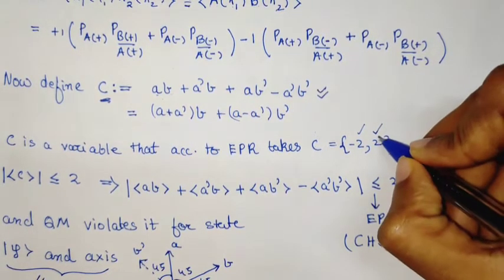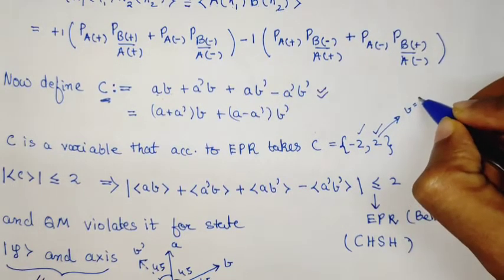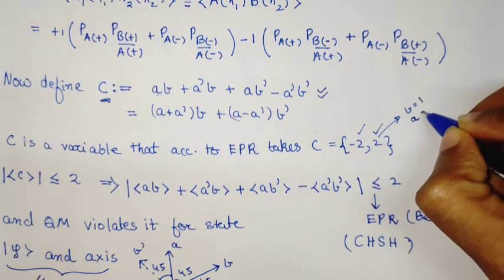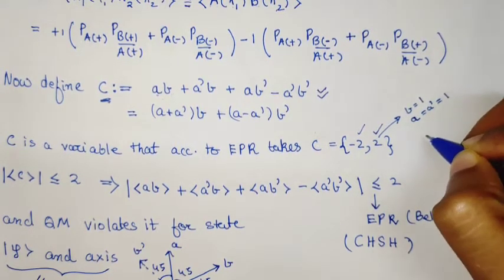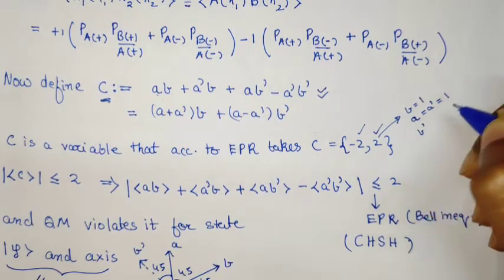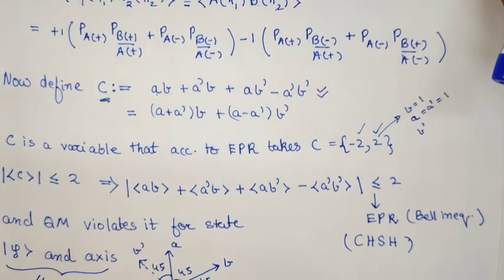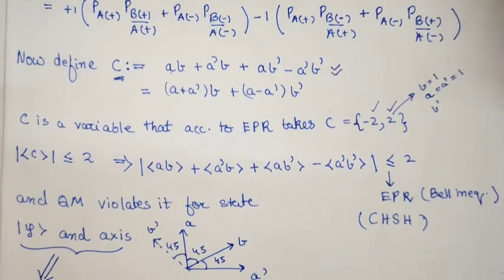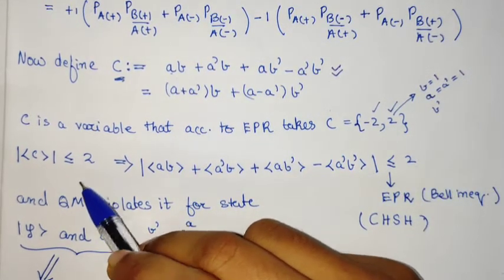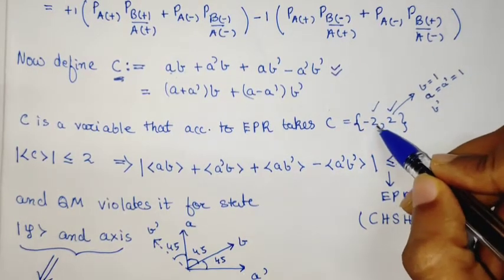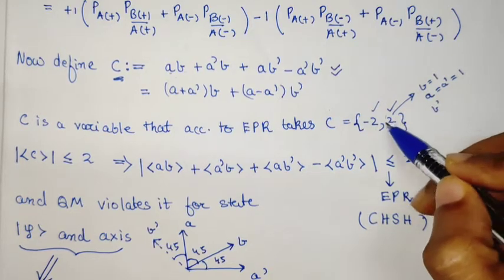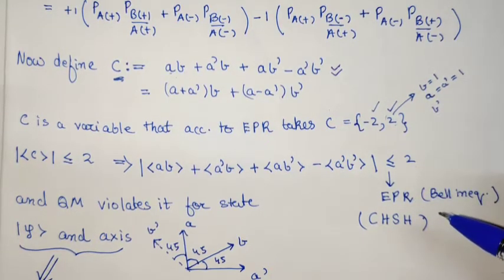For example, +2 comes when b = 1 and a = a' = 1, and b' can be anything. Similarly, we can get -2. This means the expectation value of C is bounded by 2, because C can only be -2 or +2. Its expectation value cannot exceed the maximum value of the variable.